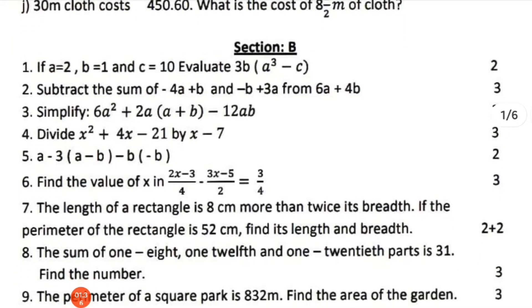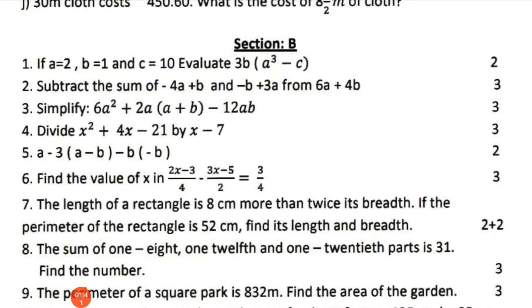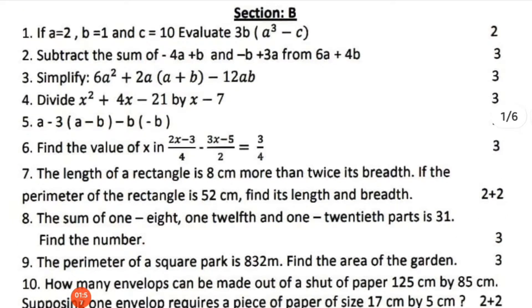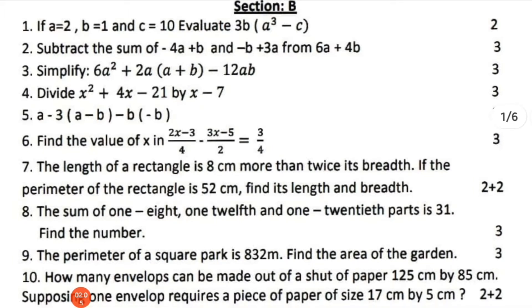Section B, Question 1: given a equals 2, b equals 1, c equals 10, evaluate 3b in brackets into a cubed minus c. Subtract the sum of minus 4a plus b and minus b plus 3a from 6a plus 4b. Simplify 6a squared plus 2a into a plus b minus 12ab.